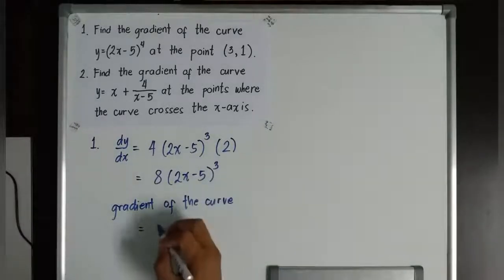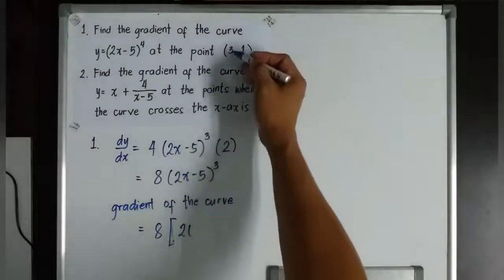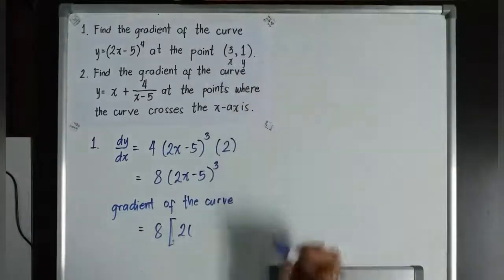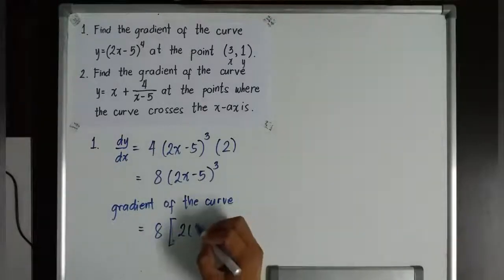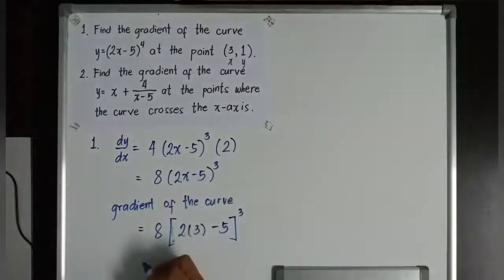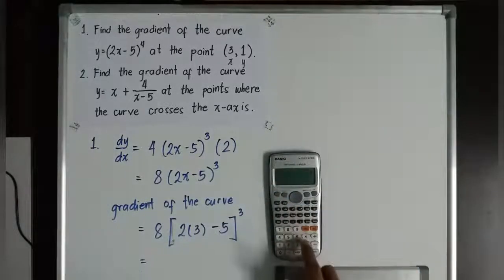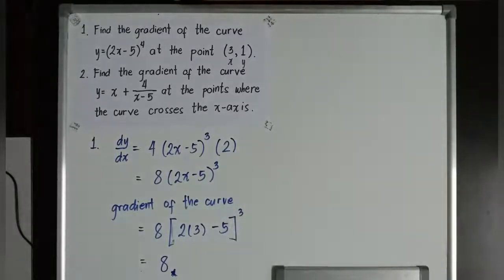Therefore, gradient of the curve is equivalent now to 8 times 2 times... What is the x? See? This is the x coordinate and this is the y coordinate. We are just considering the x coordinate this time because we are only looking for the gradient. So, it will just become 3, then minus 5, then to the power of 3. You can actually do it in your calculator already. Calculator will give you immediately the answer to 2 times 3 minus 5 to the power of 3, which is equivalent to 8. So, the gradient of the curve at 0.31 is equivalent to 8.